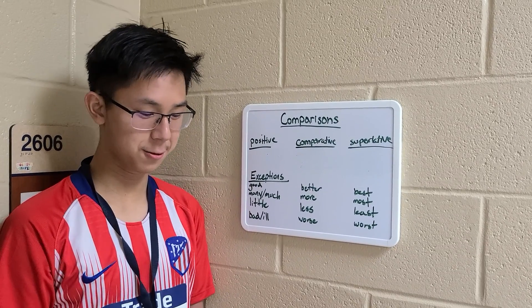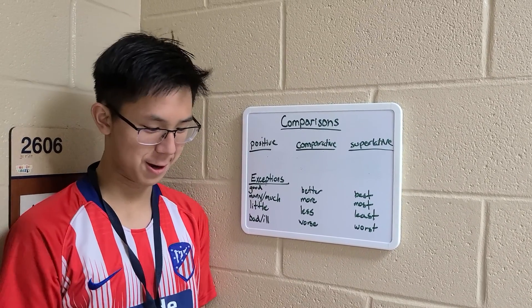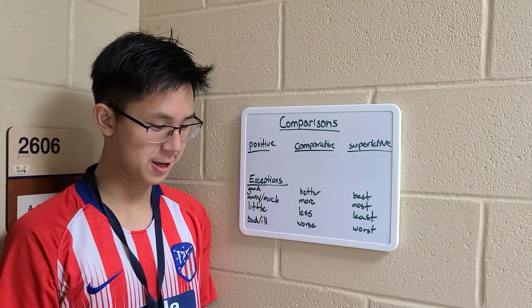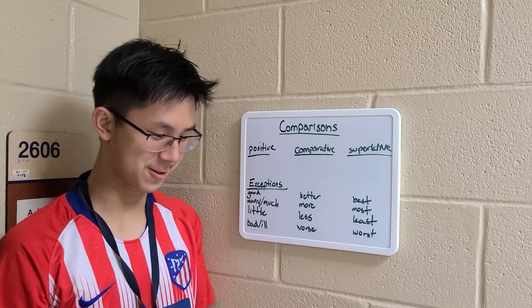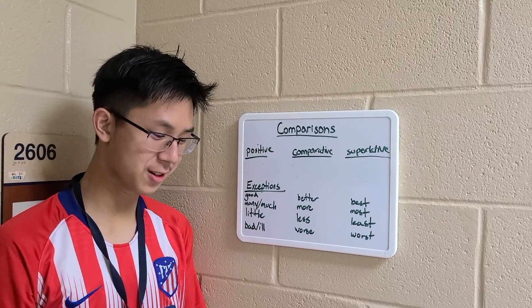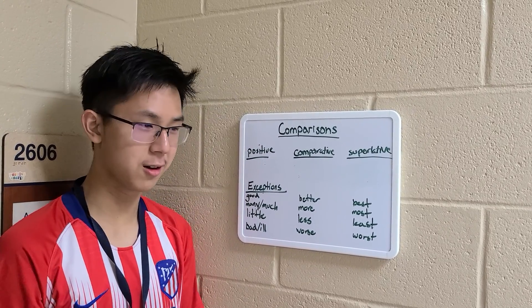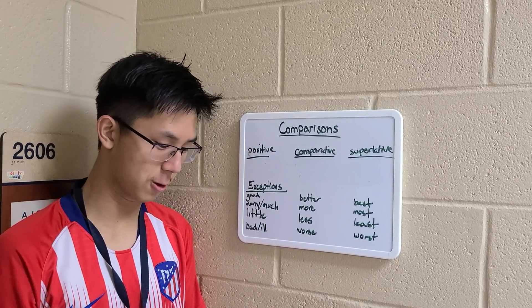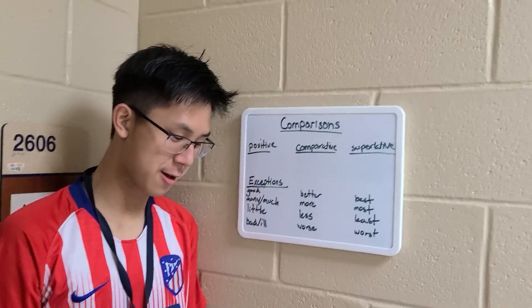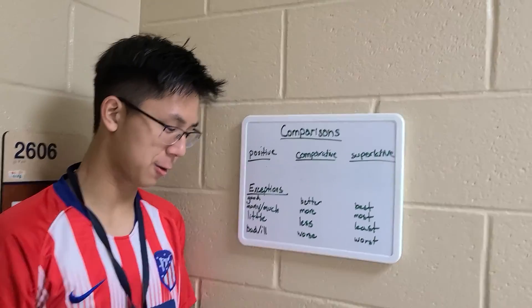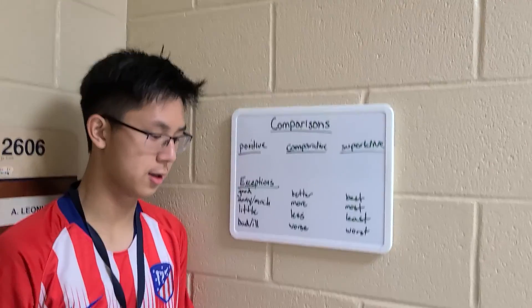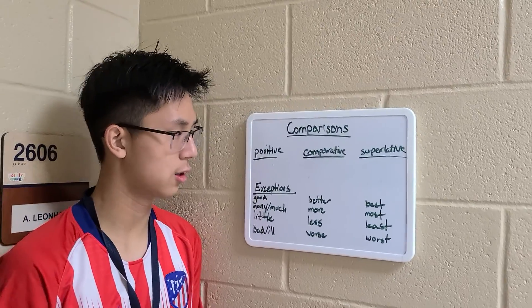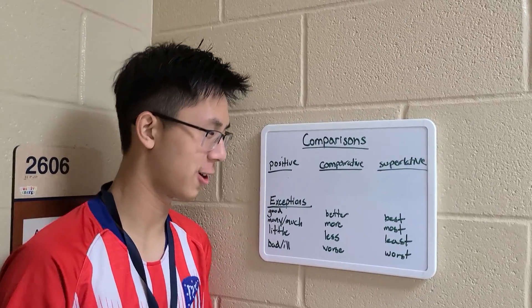Today we will be discussing degrees of comparison. There are three degrees of comparison: positive, comparative, and superlative. Positive comparisons describe only one thing, such as, the tree was tall.